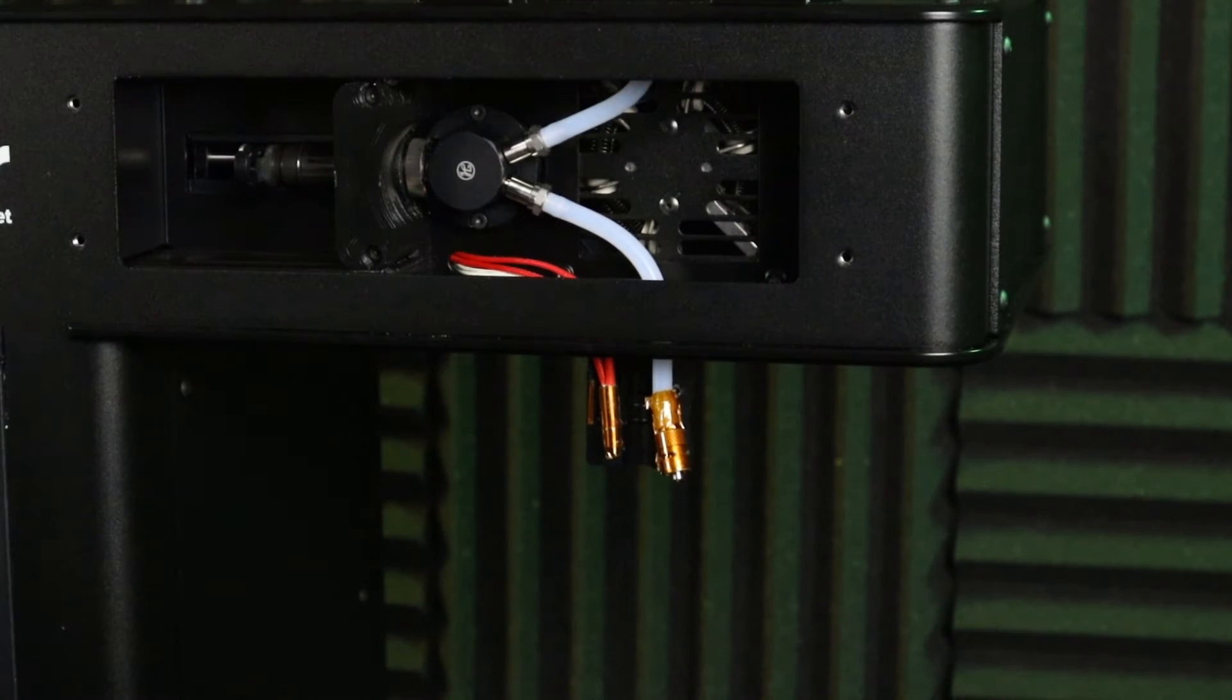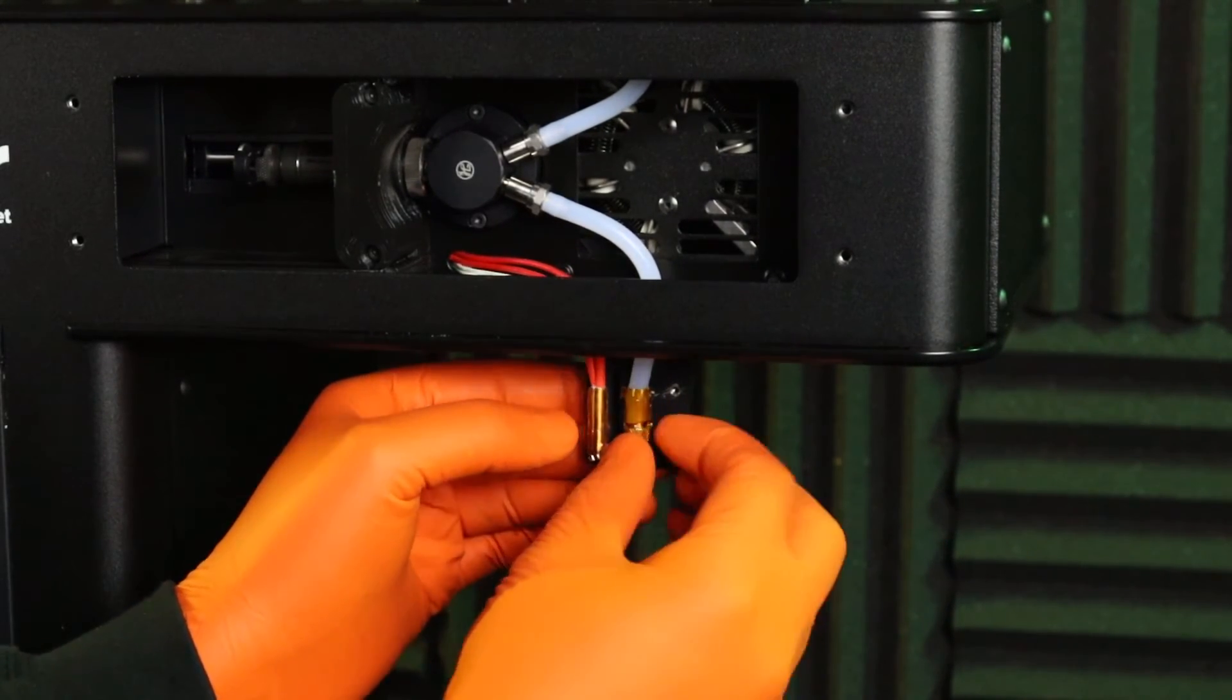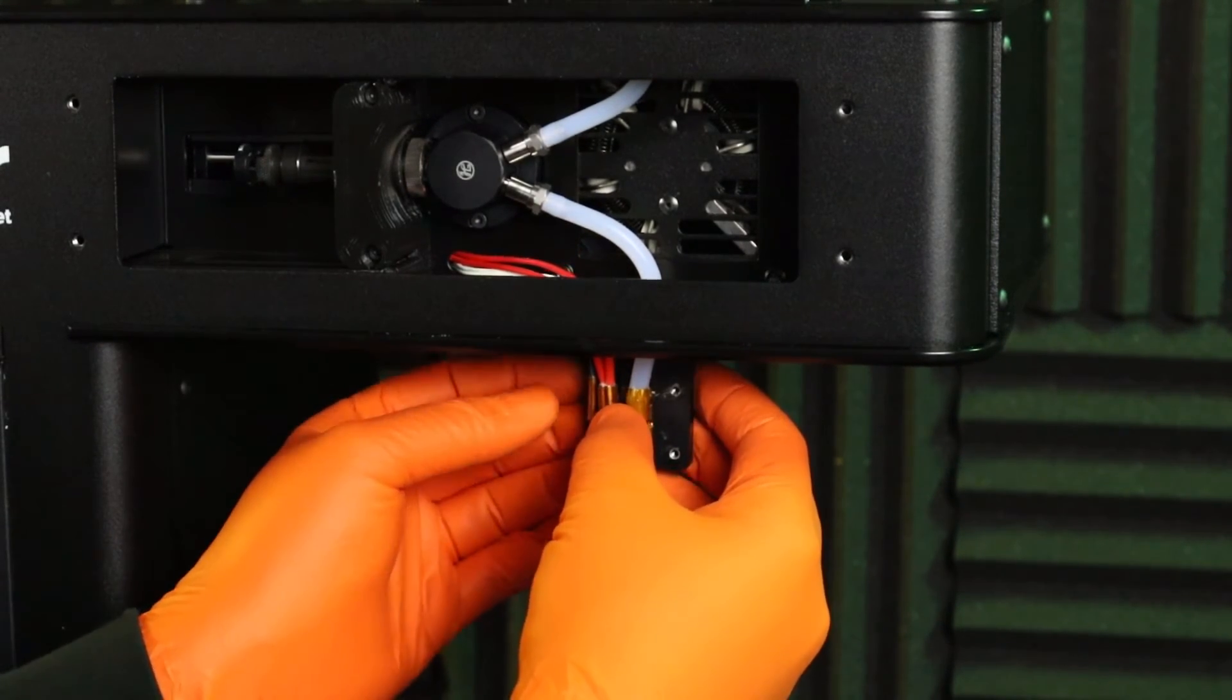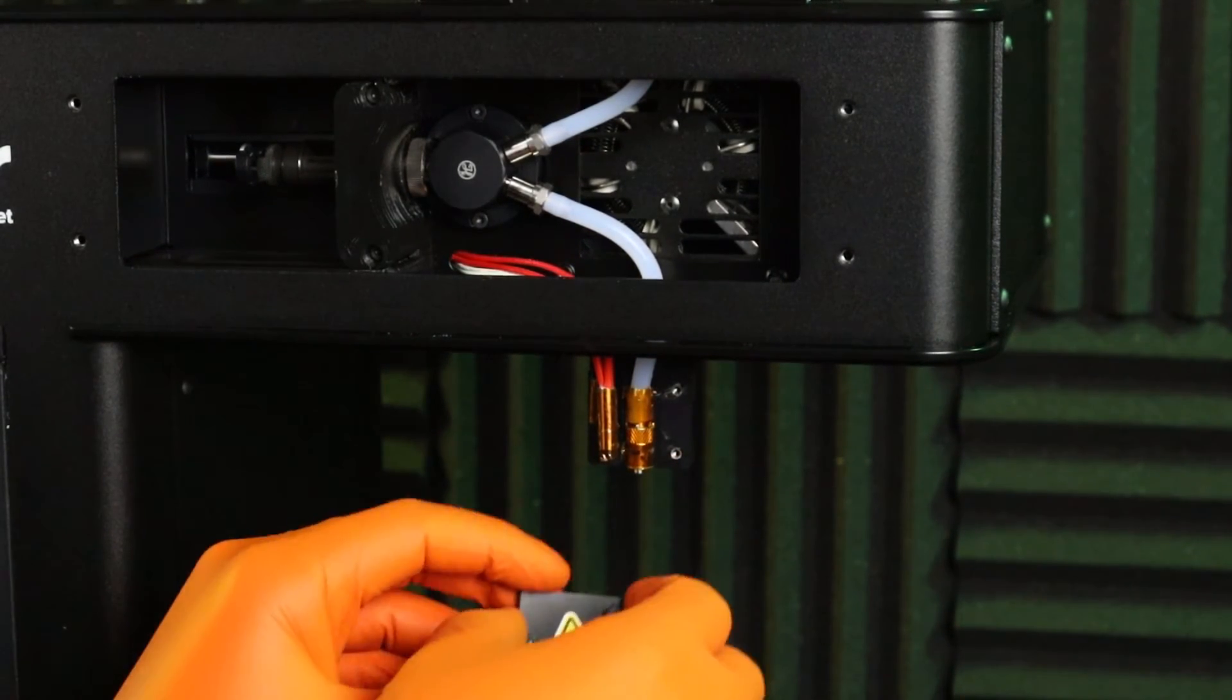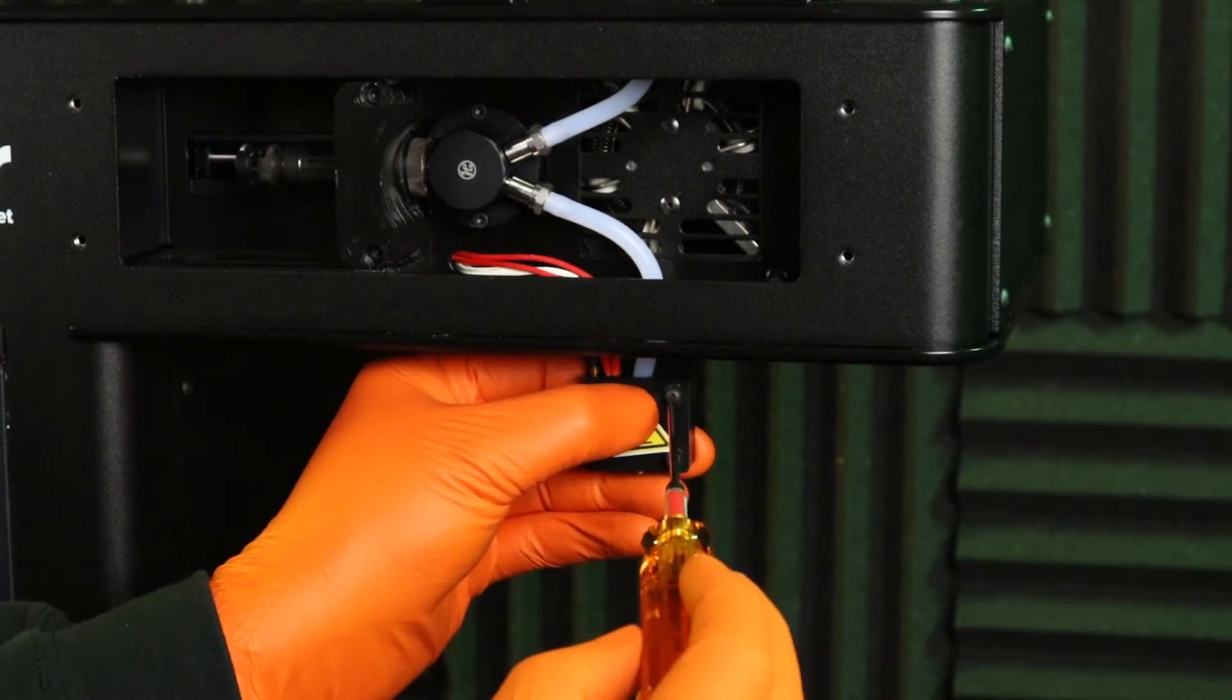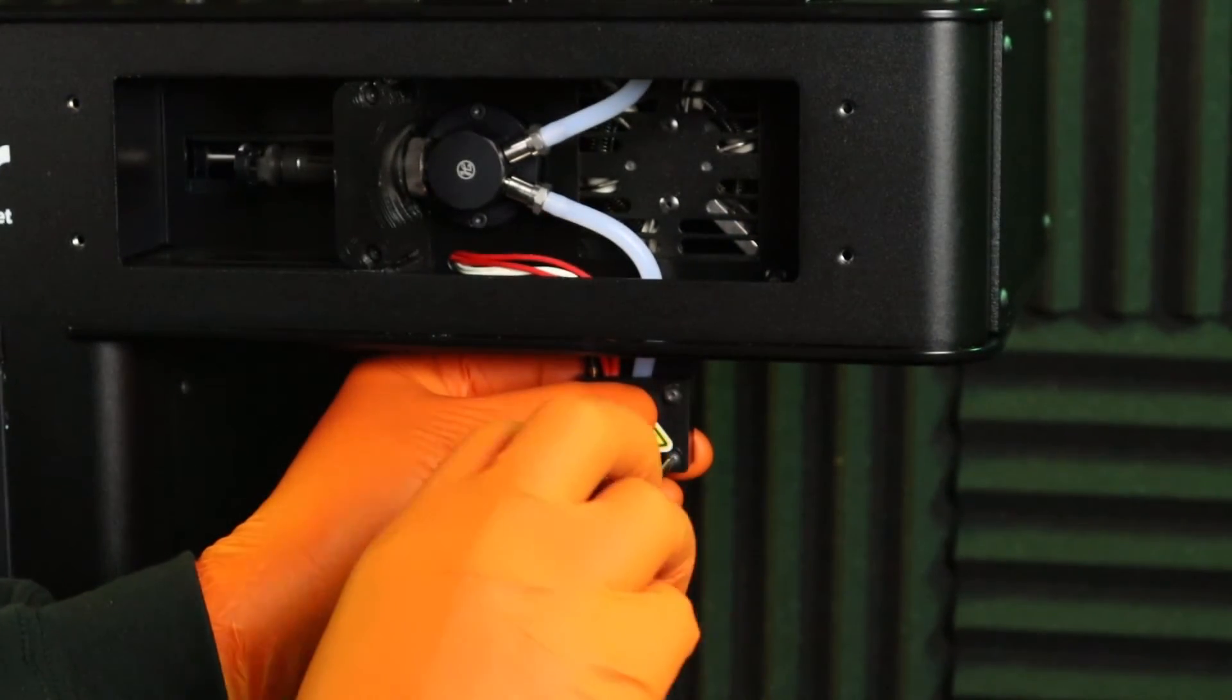Next, we're going to reassemble the lure lock heat block. First, place the PTFE and lure lock barb adapter into the slotted and grooved space in the heat block. Seat the red needle heater and black thermistor wire ends into their respective slots. Hold all three in place while putting the heat block cover back on. Using the 2 millimeter hexagonal driver, start by inserting the two screws on the right.